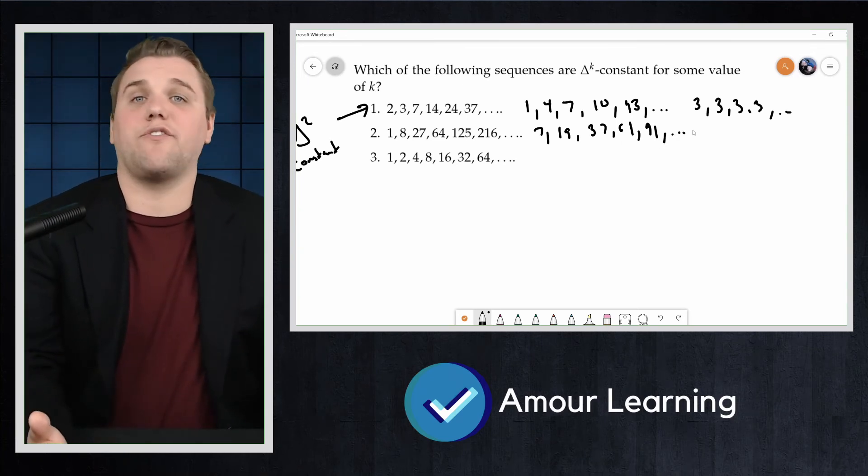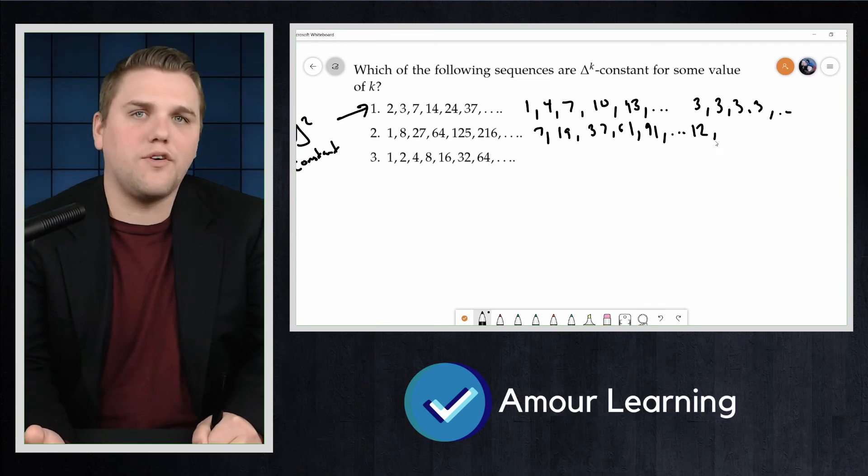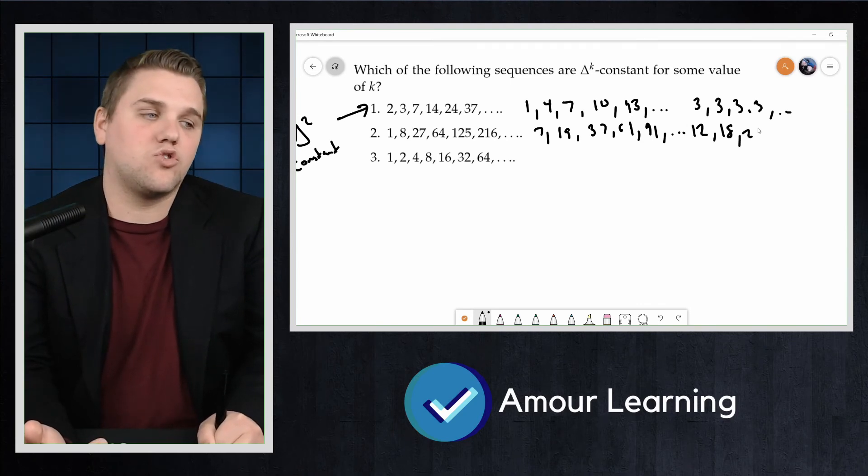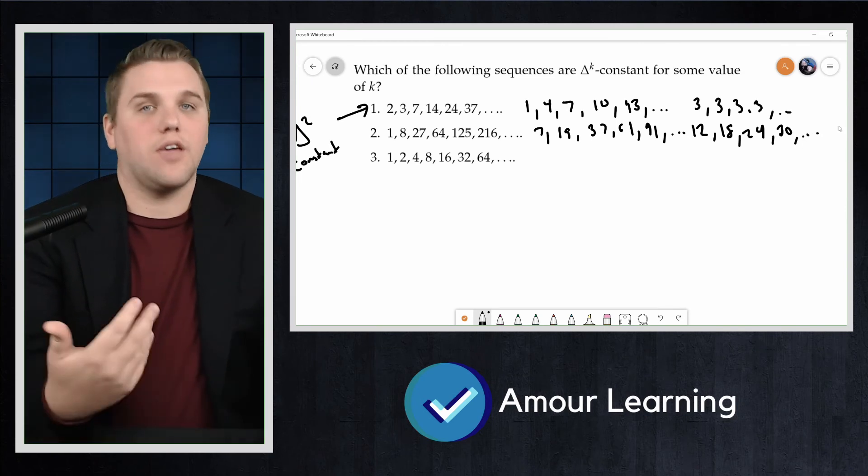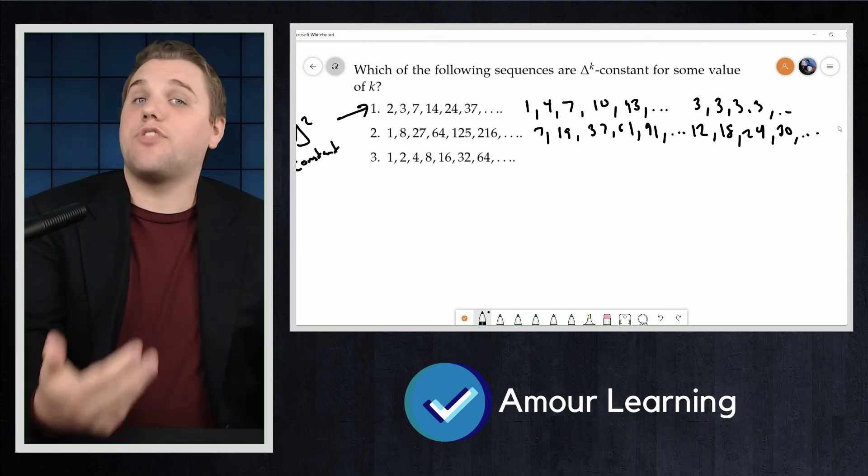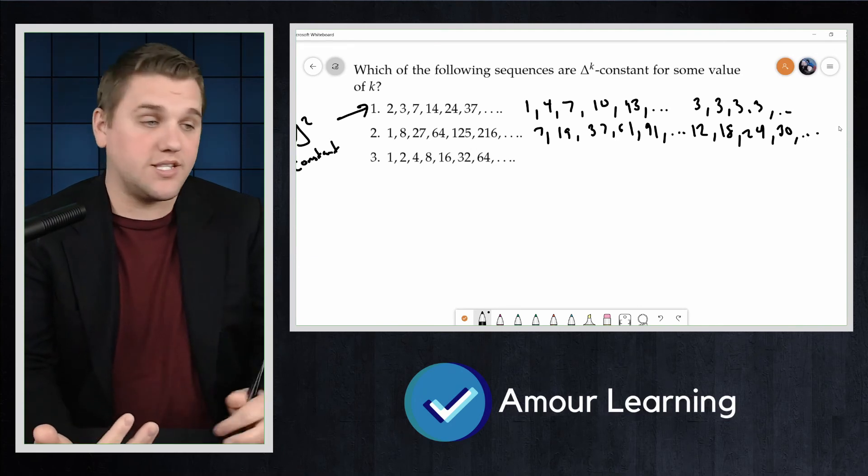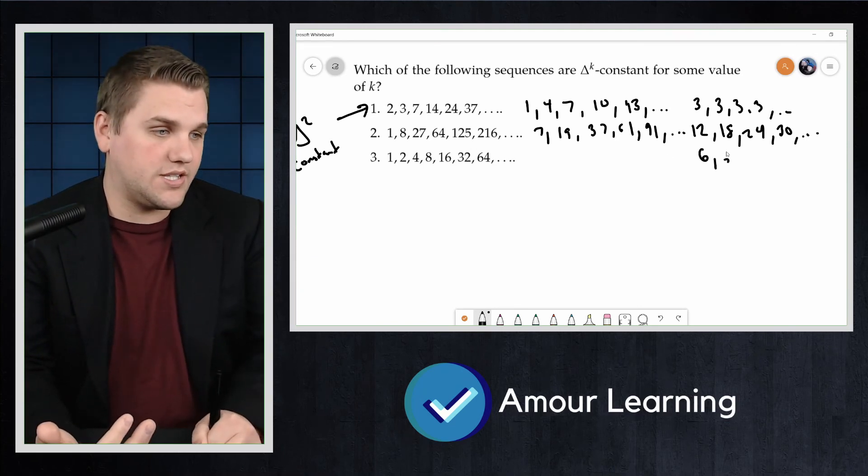The sequence of second differences is 12, 18, 24, 30, and so forth. Okay, we're getting somewhere. The sequence of third differences is constant: 6, 6, 6, 6, and so forth.